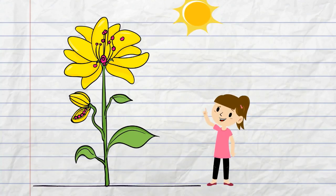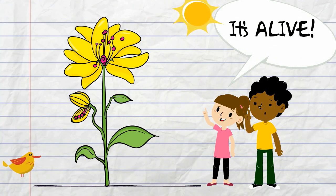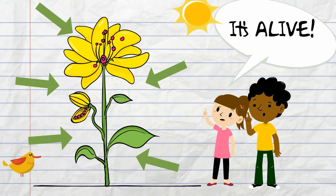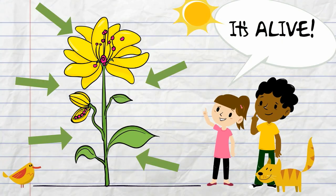A plant is a living thing. It has many parts that work together to support its life.